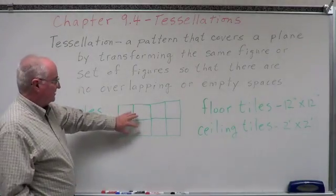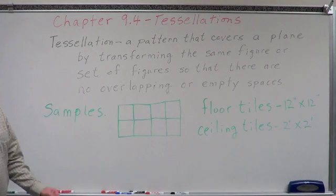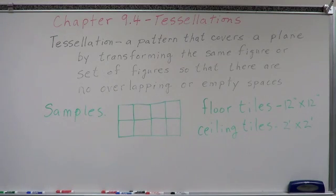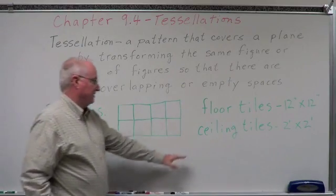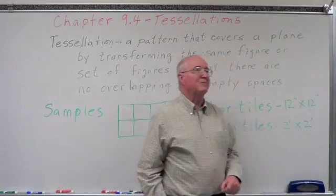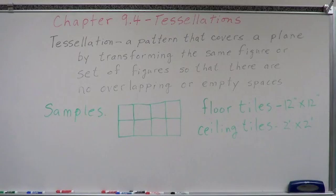Just taking squares and putting them together, we can simply cover a plane. Look down at the floor — you see 12 by 12 inch floor tiles that cover the whole surface. Different kinds of floor tiles, different sizes. Look up at the ceiling and you can see ceiling tiles, either 2 by 2 or 2 by 4, that cover the entire ceiling. Those are examples of tessellations.